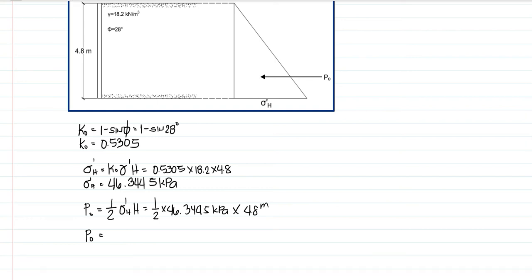times the height of 4.8 meters. So our at rest earth force will now be equivalent to 111.2268. So this will be in kilonewton per meter. So this is the answer we're looking for.